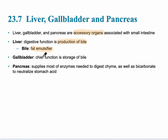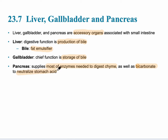The gallbladder is the chief storage organ of bile and is located just posterior to the liver. The pancreas supplies most of the enzymes needed to digest chyme, and these enzymes break down all of the main nutrients in the small intestine — like carbohydrates, proteins, and lipids — as well as producing bicarbonate, which helps to neutralize stomach acid because bicarbonate has a high pH, which is alkaline.